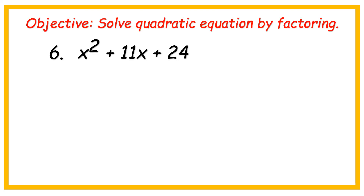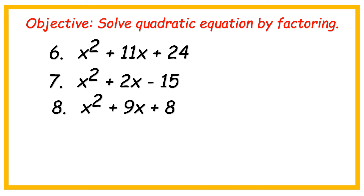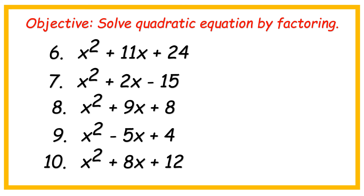Number 6: x squared plus 11x plus 24. Number 7: x squared plus 2x minus 15. Number 8: x squared plus 9x plus 8. Number 9: x squared minus 5x plus 4. And number 10: x squared plus 8x plus 12. You can pause this video if you need more time.